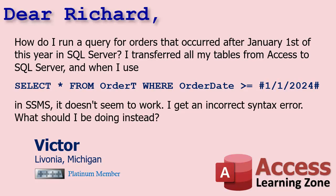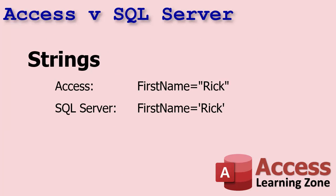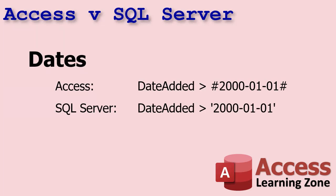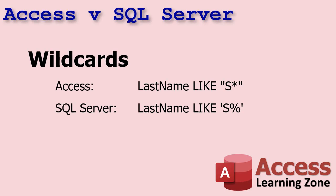Well Victor, there are some differences in the SQL language between Access and SQL Server. The overall structure of an SQL statement is basically the same, but there are some little differences. First of all is the way you format strings — in Access we use double quotes, but in SQL Server you use single quotes. Dates are formatted differently too: in Access we put pound signs around date values, but in SQL Server we again use single quotes. The wildcard characters are different too — Access uses an asterisk whereas SQL Server uses a percent sign.